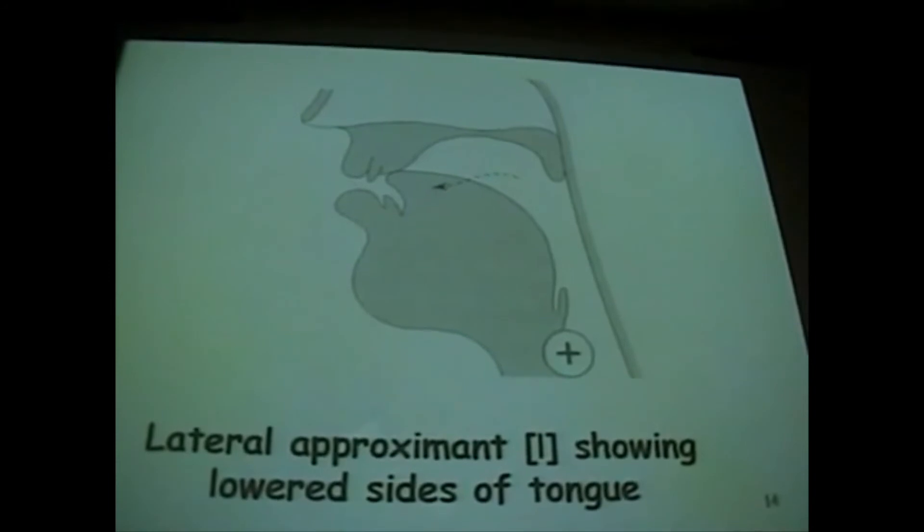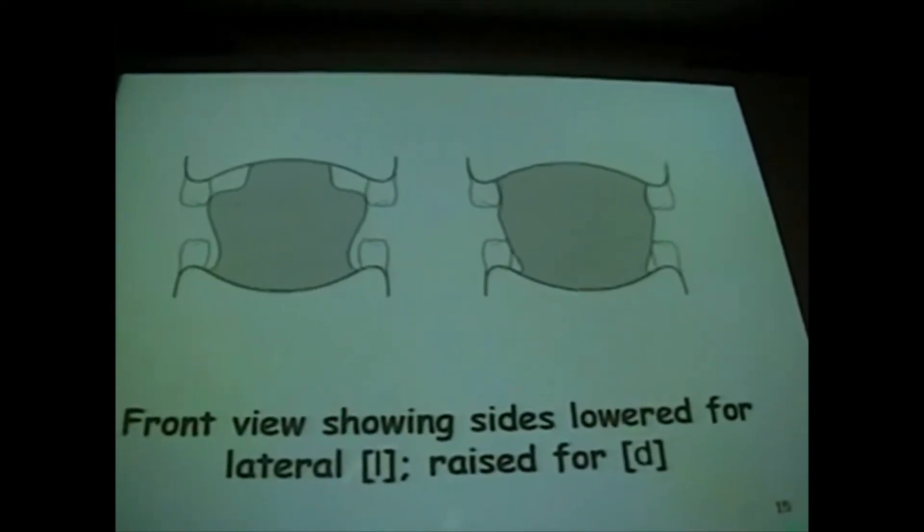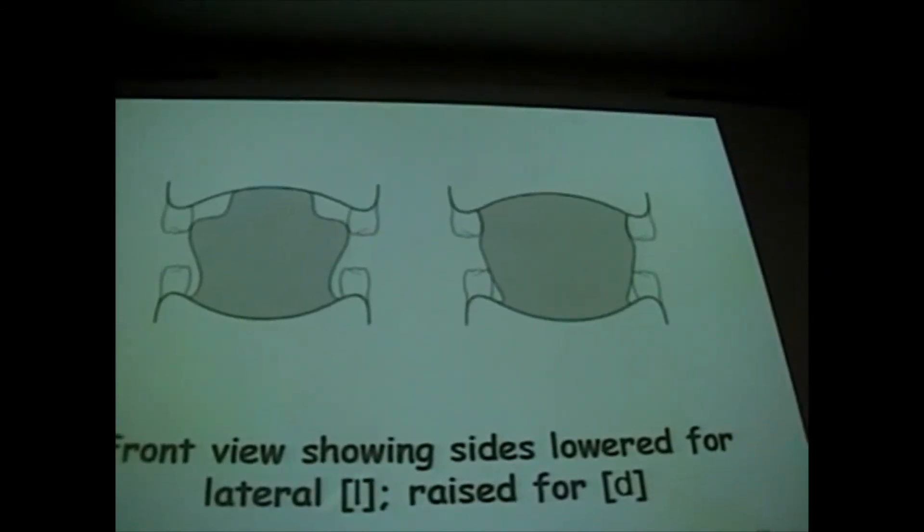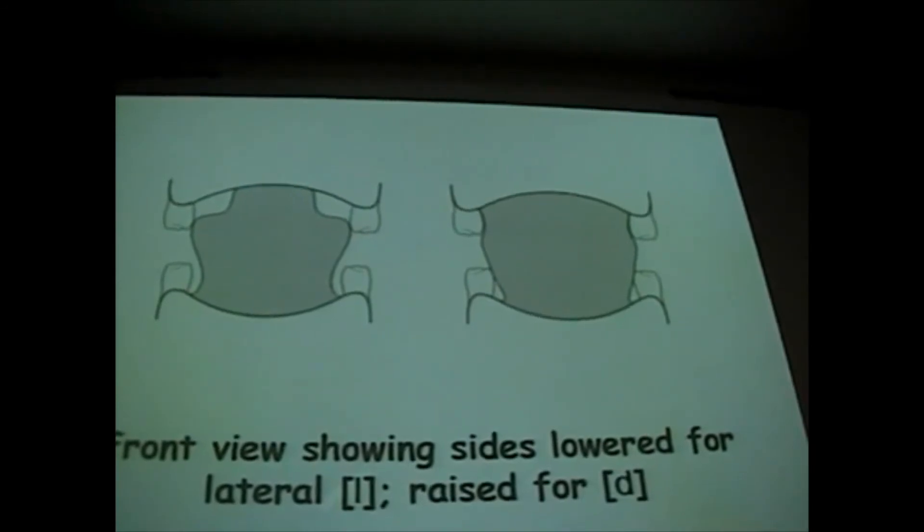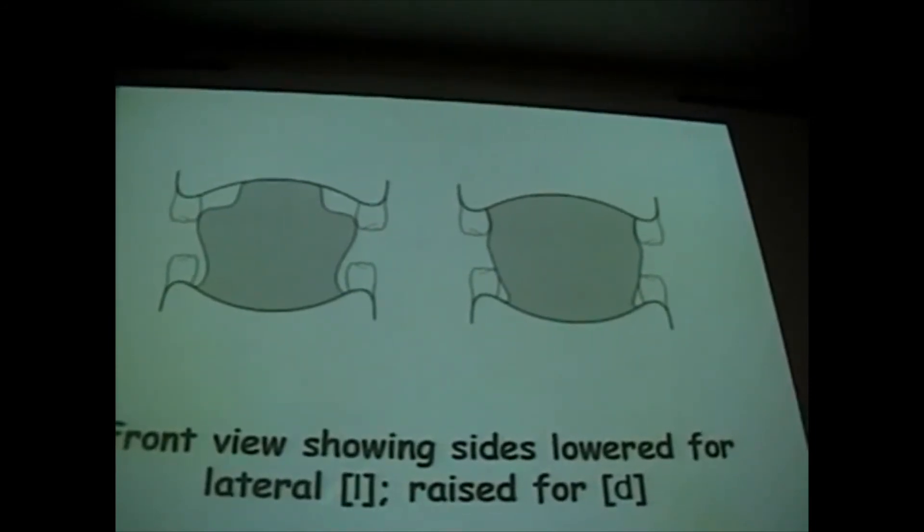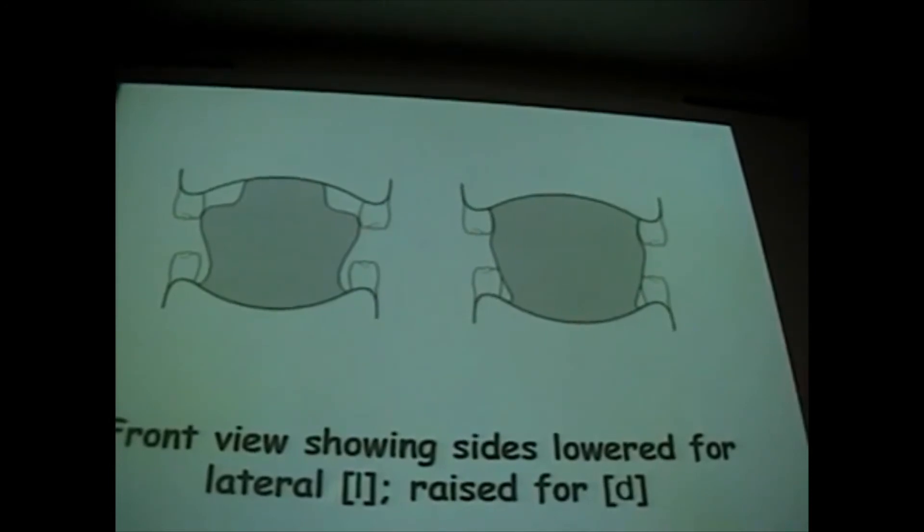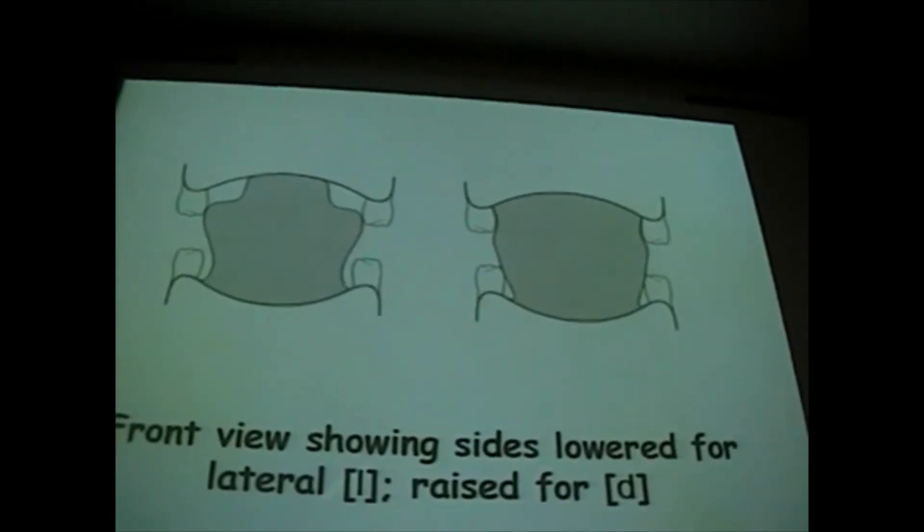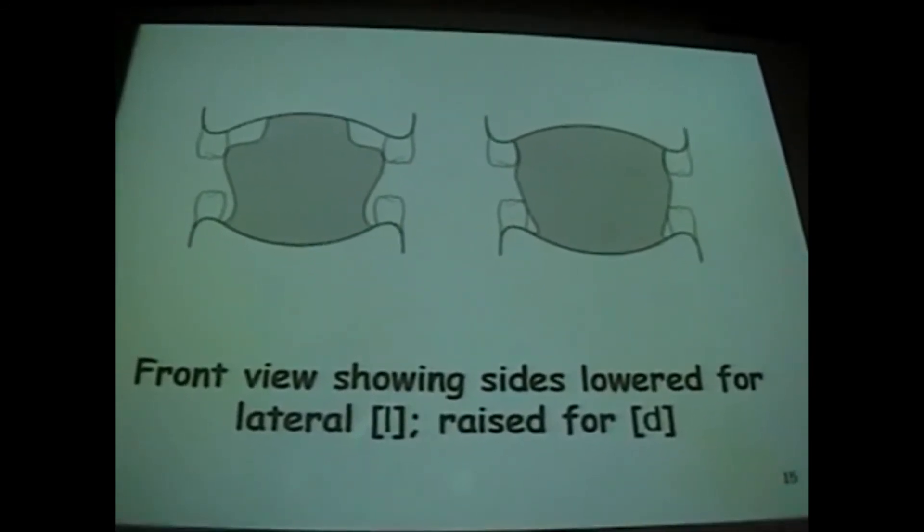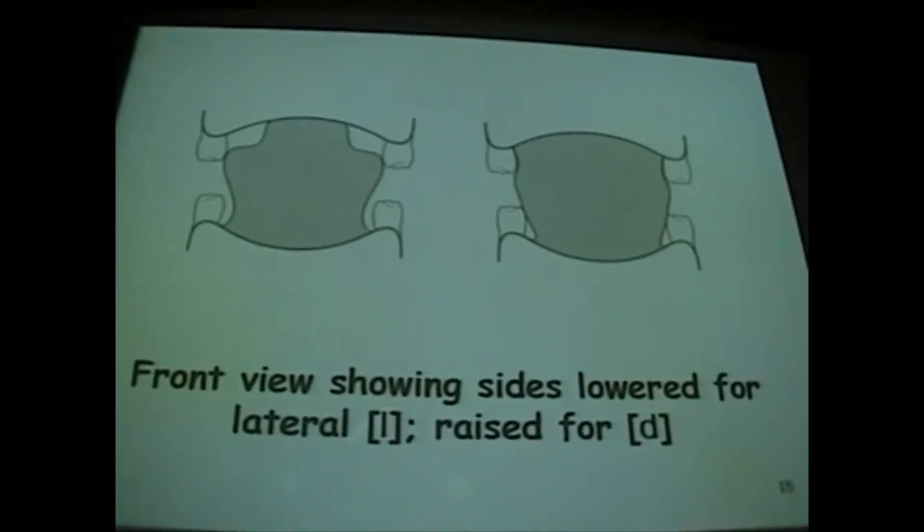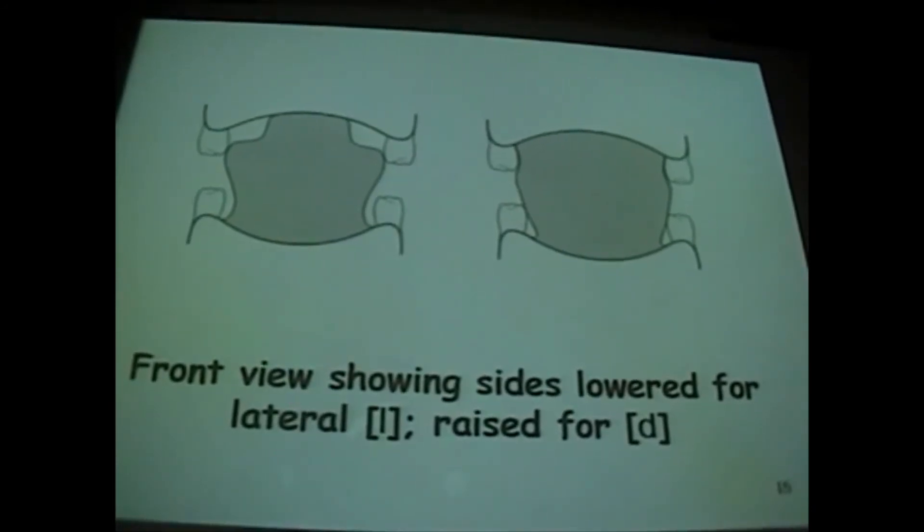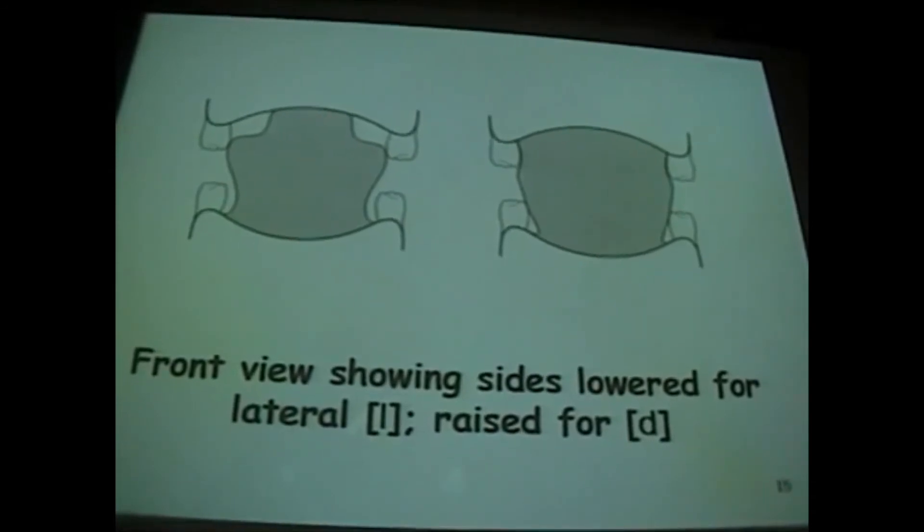If you want to see what your tongue looks like, then you will see there a front view showing, on the left-hand side, the front view of the lateral L, showing the sides lower, as compared with the D, where you have the sides raised. In an S, you have a channel down the middle of the tongue. So you have all these ways of arranging the tongue in making these sounds. But here, for the L, we have the lowered sides of the tongue. We also have, this is called a lateral approximant, often referred to merely as a lateral because there's only one lateral in English, whereas there are several approximants.